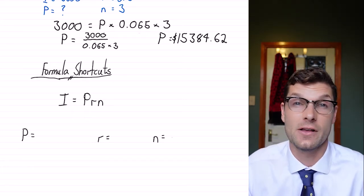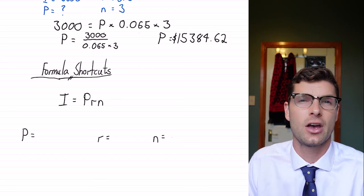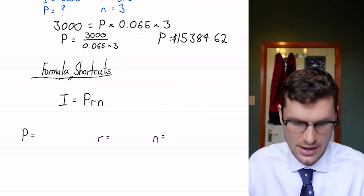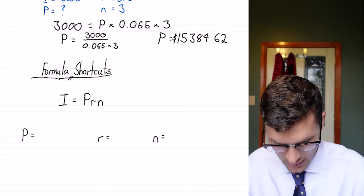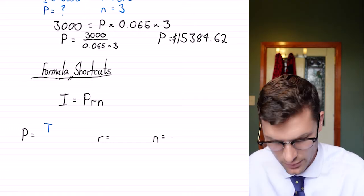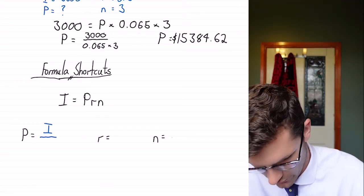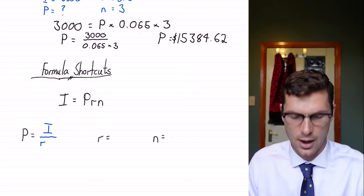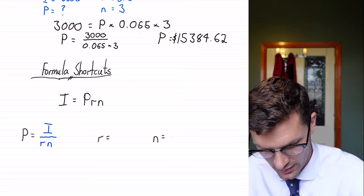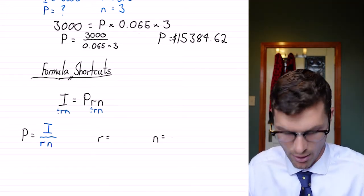There are a couple of formula shortcuts for this, and we're just going to do this with rearranging our variables to find out the unknown. So in that example there with finding P, the formula shortcut is that it's the interest divided by the other two terms multiplied together, or divided by R times N. And we can see that if we divide these two over, we have to do the same thing on both sides, and that's how we get to our answer.